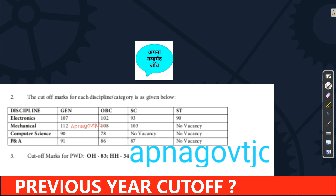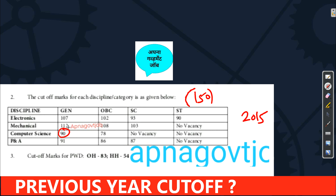Now let's discuss cutoff. In 2015, only electronics, mechanical, and computer science papers were there. Out of 150 marks: electronics general cutoff was 107, OBC 102, SC 93, ST 90. Mechanical cutoff was 112, 108, and 103. Computer science had a lower cutoff — general 90, OBC 78, and SC and ST had no vacancy.